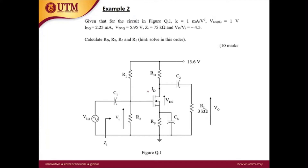For this circuit, k is given as 1 milliampere per volt squared, threshold voltage is 1 volt, IDQ is given, VDSQ is given, Zi is given, and the voltage gain Vout over Vin is also given. The question asks you to calculate RD, RS, R1, and R2 — all the resistors in the bias circuit. The hint is to start from RD.